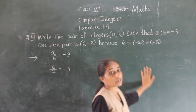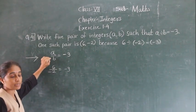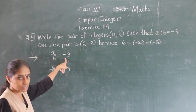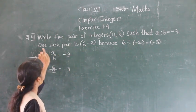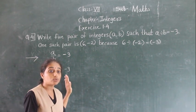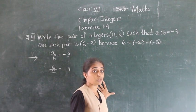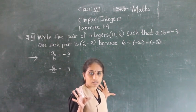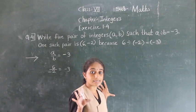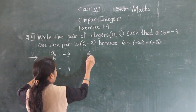The answer we should give is minus 3. It has given one pair: A divided by B equals minus 3. The first pair given is 6 upon 2. We need to find such pairs where we get the answer 3, then apply minus sign to get minus 3.